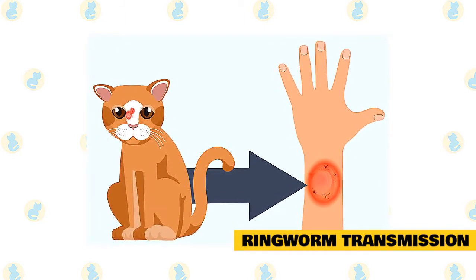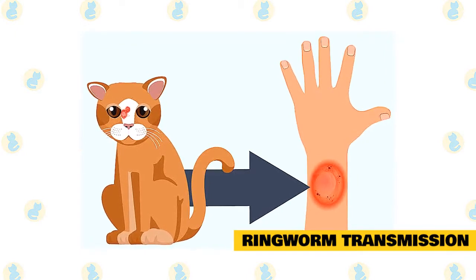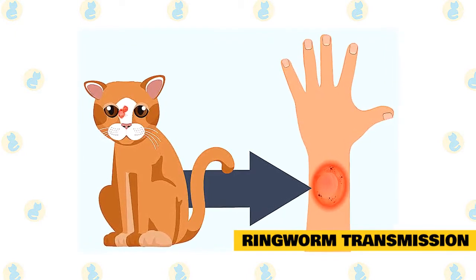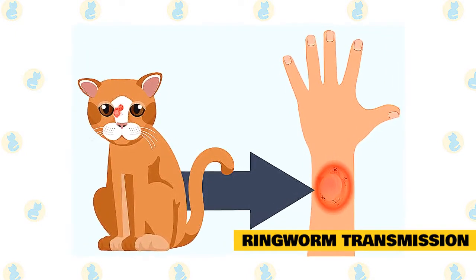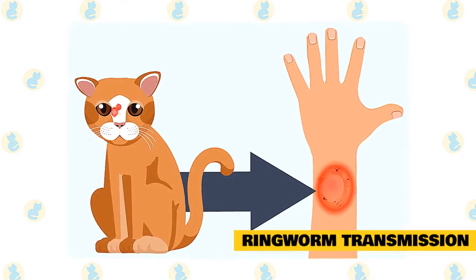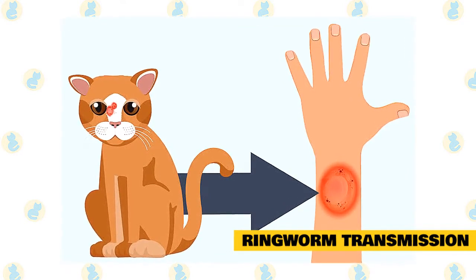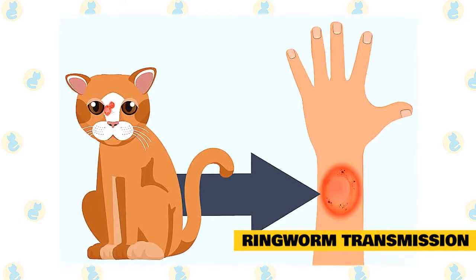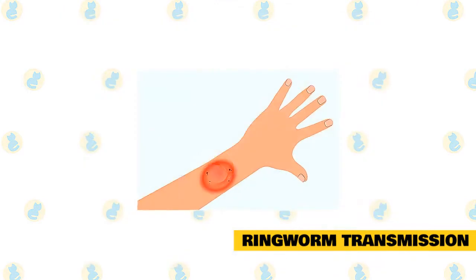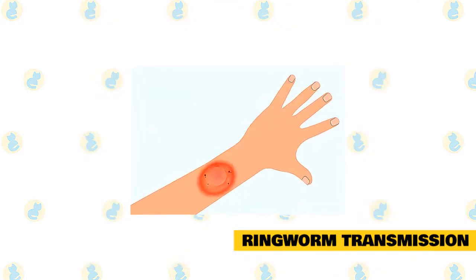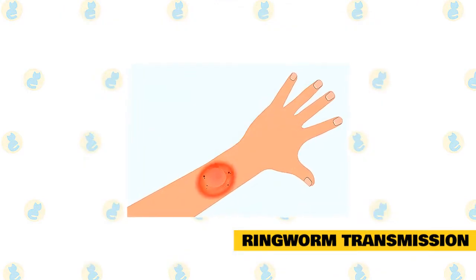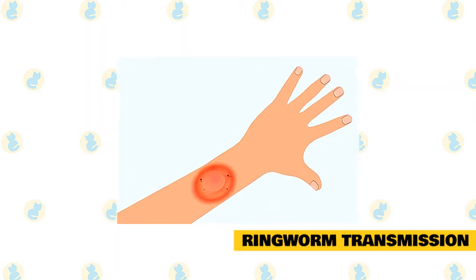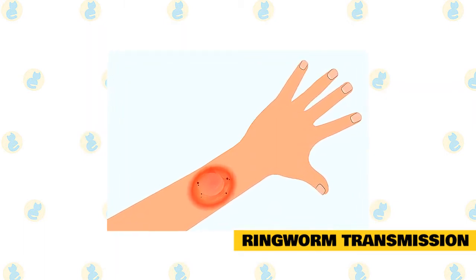The fungal spores may remain dormant on combs, brushes, food bowls, furniture, bedding, carpet, or other environmental surfaces for many months, reportedly up to 18 months. Contact with ringworm fungus does not always result in an infection. The amount of environmental contamination is an important factor in the development of a ringworm infection, as is the age of the exposed person or animal.